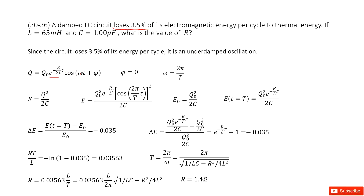In this function, phi is a constant — we can take it as 0, which is the initial phase. And omega is the angular velocity, equal to 2π over T. Now we can work on it. First, we need to write down the electromagnetic energy in the LC circuit so we can determine how it loses energy.